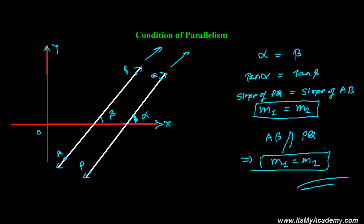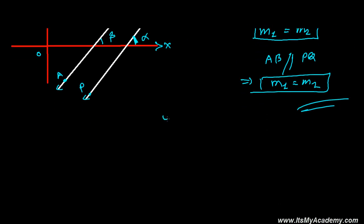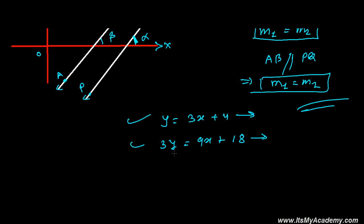Let me give you a quick example. Suppose I have a line y = 3x + 4, and another line 3y = 9x + 18. Both lines are parallel because the slope of this line and the slope of this line are the same.